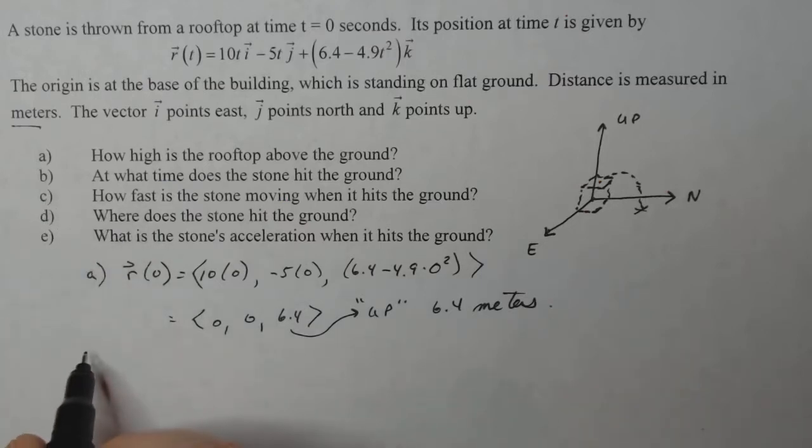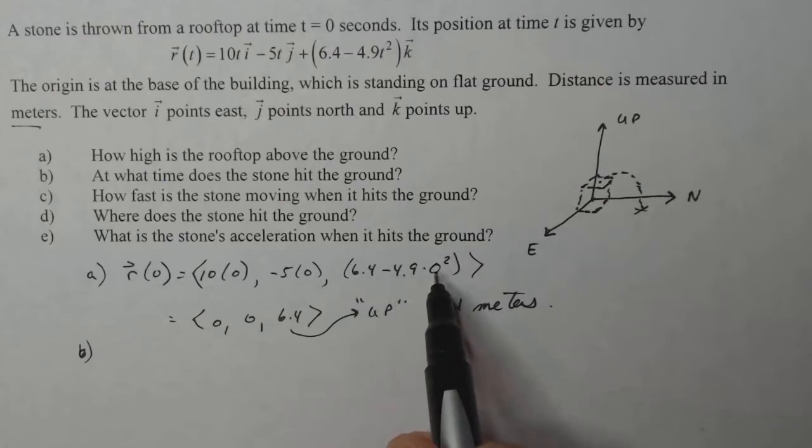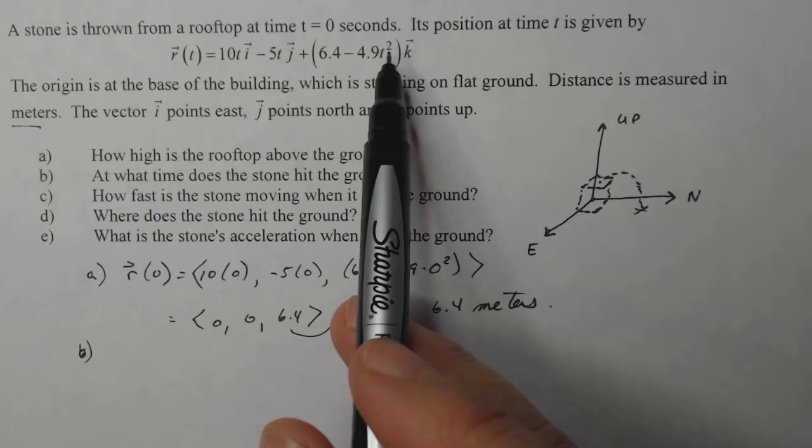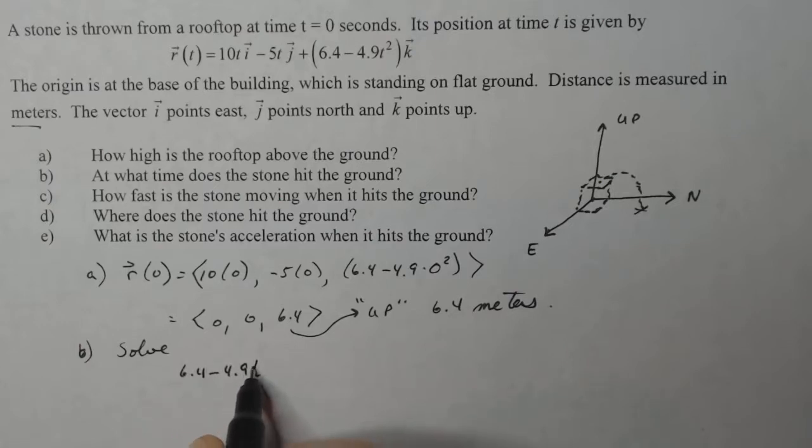Part B, at what time does the stone hit the ground? So if it's 6.4 meters up initially, then when that value is zero, or I should say this value, when this value is zero, that's when it's going to hit the ground. So I'm going to solve 6.4 minus 4.9 t squared equals zero. And that should give me the time that I want.